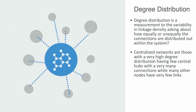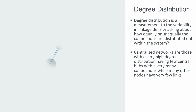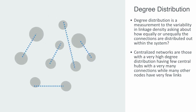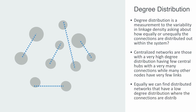For example, the metabolic network of a biological cell follows this centralized scale-free model, where the essential molecules of ADP and ATP that provide energy to fuel the cell play a central role, interacting with very many different other molecules and thus forming hubs in the metabolic network. Equally, we can find distributed networks that have a low degree distribution, where connections are distributed relatively evenly across the network.